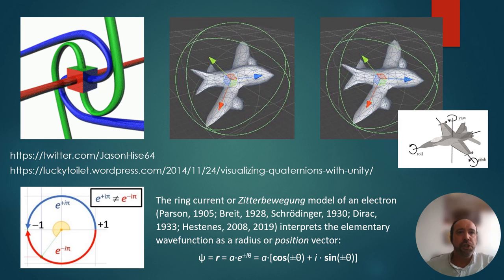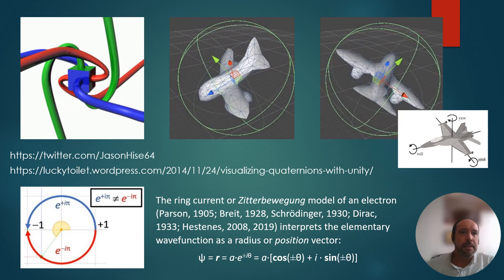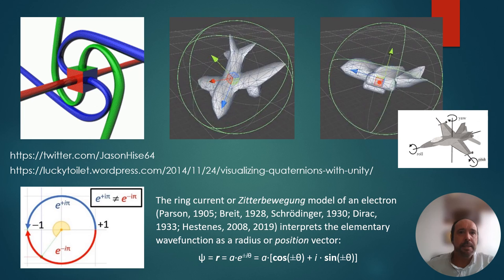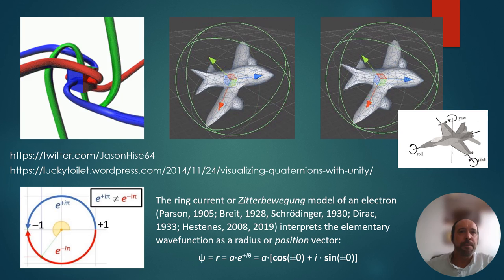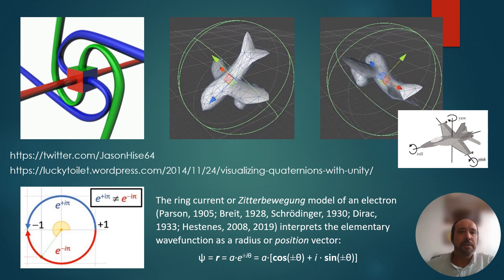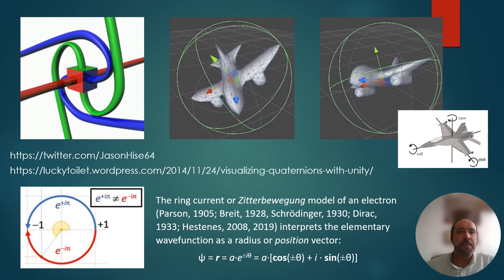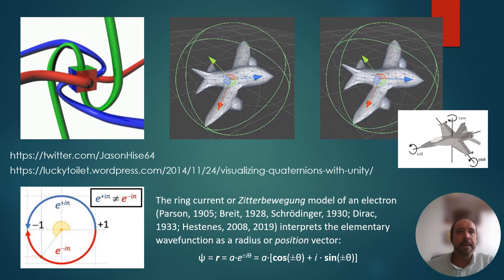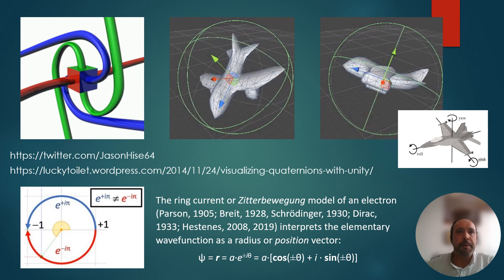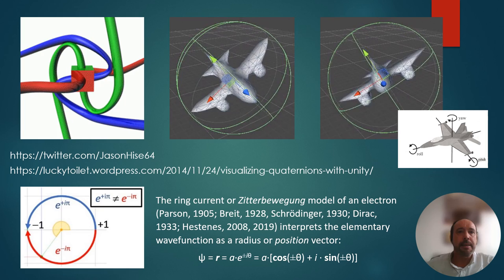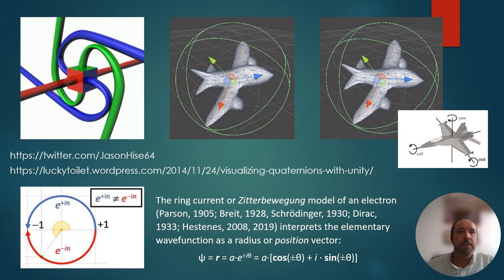With every 360-degree rotation it does not come back to its original state — look at the blue and green strings. The red strings return to their original place after 360 degrees, but the blue and green ones have a different orientation. After two turns — 720 degrees — they all come back to the same state. So you have something real with a 720-degree symmetry, and we don't need to imagine complicated 4D spaces to understand it.